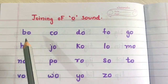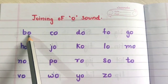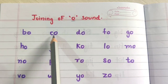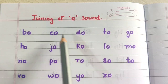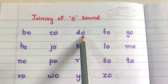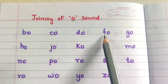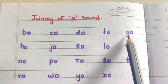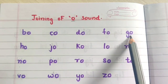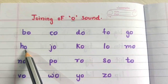Let's start children. B, O, Bo. K, O, Ko. D, O, Do. F, O, Fo. G, O, Go. H, O, Ho.